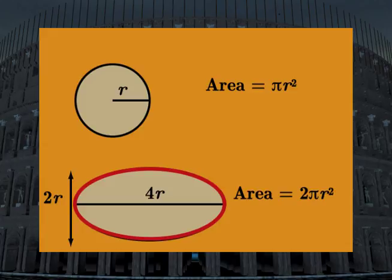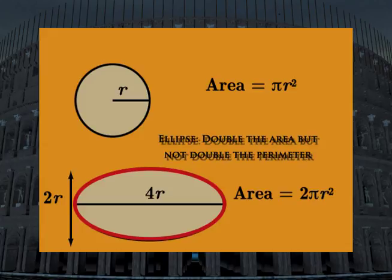The perimeter of the ellipse, on the other hand, is only 50% longer than that of the circle.